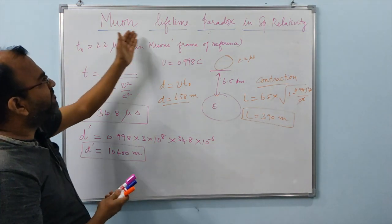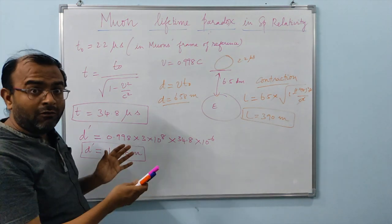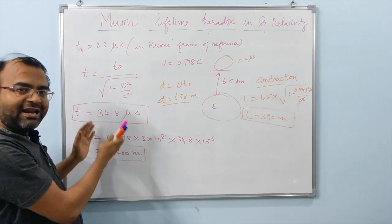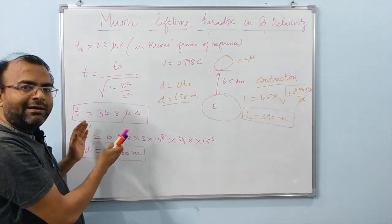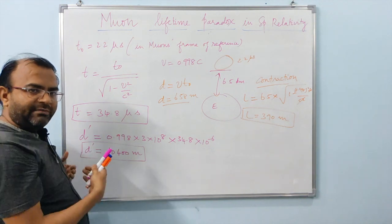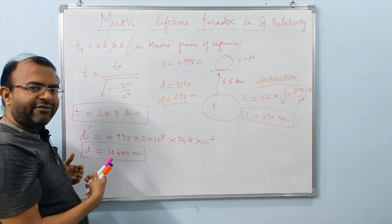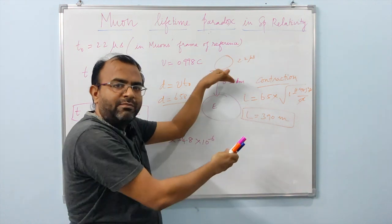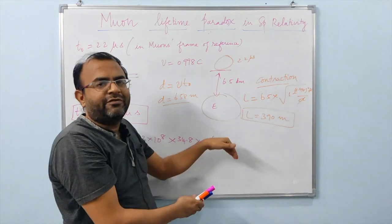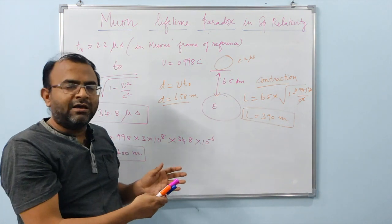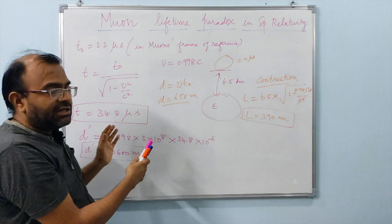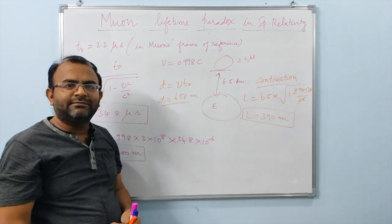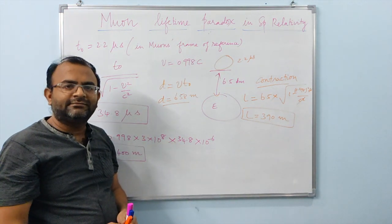The muon lifetime paradox can therefore be resolved using either the time dilation effect from Earth's frame of reference, or the length contraction effect from the muon's frame of reference. Either way, things work out and the lifetime paradox is easily resolved.